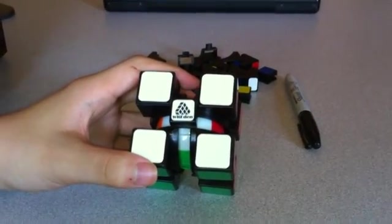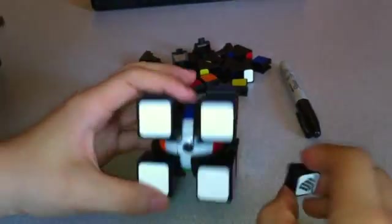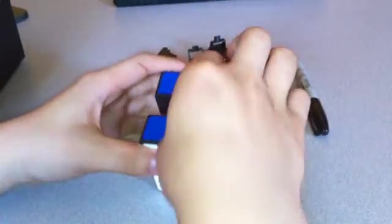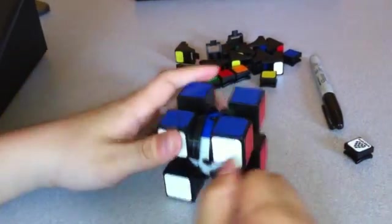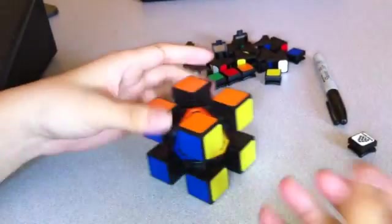This is a tutorial of the Wit Eden Wormhole 1, as you can see here. What I just did was I stripped it of all the centers and these edge pieces. I call this the naked wormhole, as you can see.